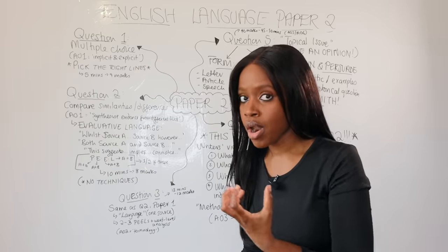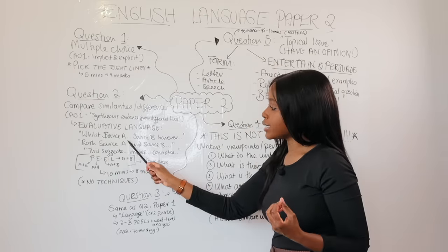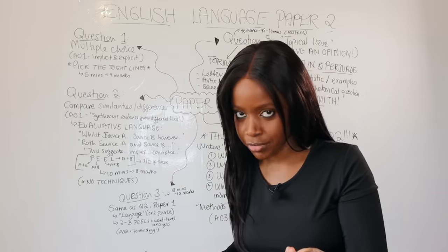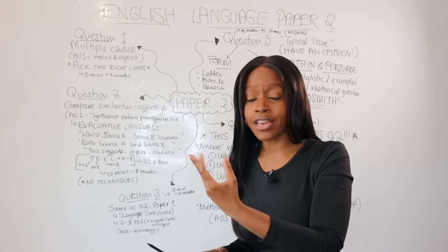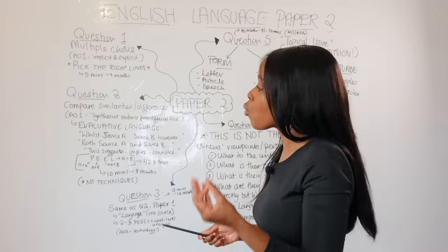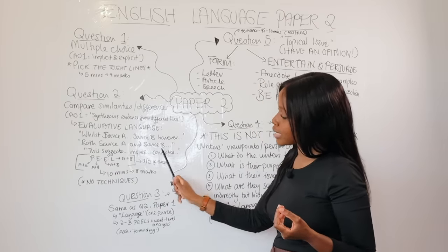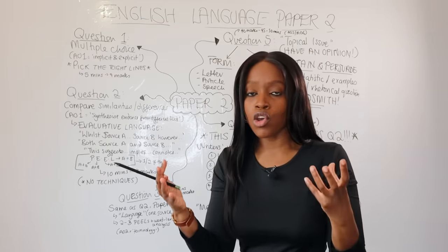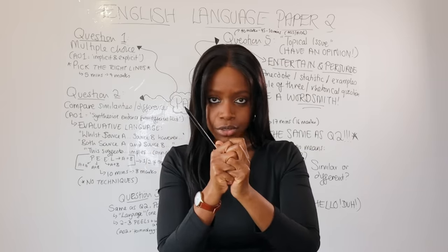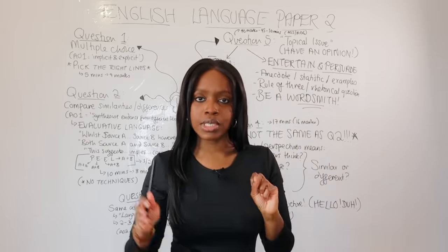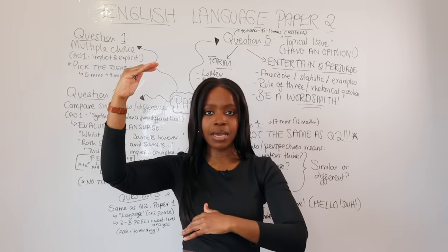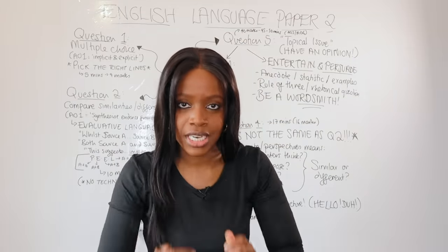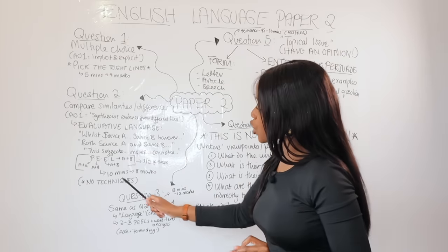If you're talking about differences, start your answer: 'While source A demonstrates/conveys [X], source B however shows [Y].' If the question asks about similarities, use: 'Both source A and source B demonstrate [X].' Make sure in your paragraphs you are integrating both texts — do not allocate one paragraph for source A and one for source B. That's not comparing; that's talking about them in parallel. Comparison means you have to integrate both sources.